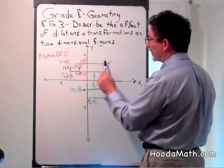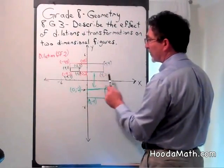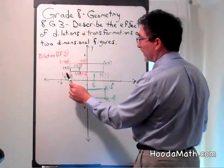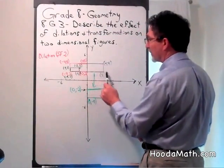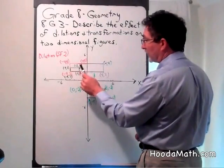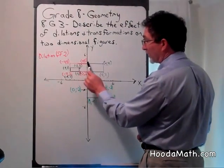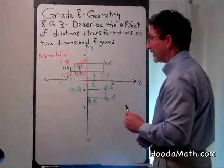So this new vertex is 4, positive 4. Instead of this being negative 4, 2, this is positive 4, 2, 4 units to the right. It is still the same rectangle, a 2 by 4 inch rectangle.